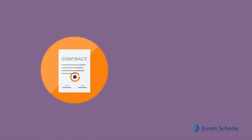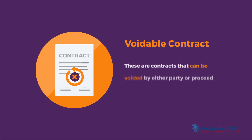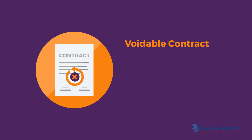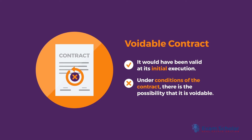A voidable contract falls into a gray area. These are contracts that can be voided by either party, or proceed by choice of the parties involved to completion. A voidable contract would have been valid at its initial execution. However, under conditions of the contract, there is the possibility that it is voidable.